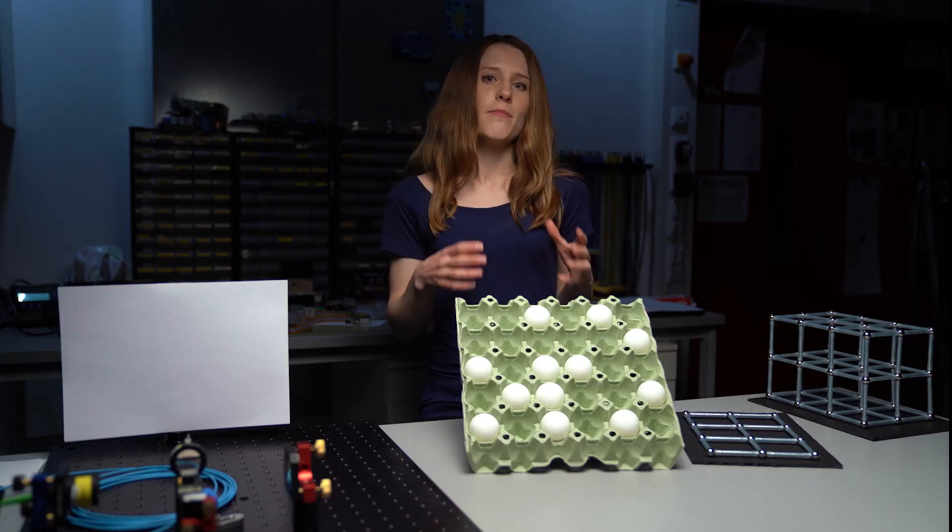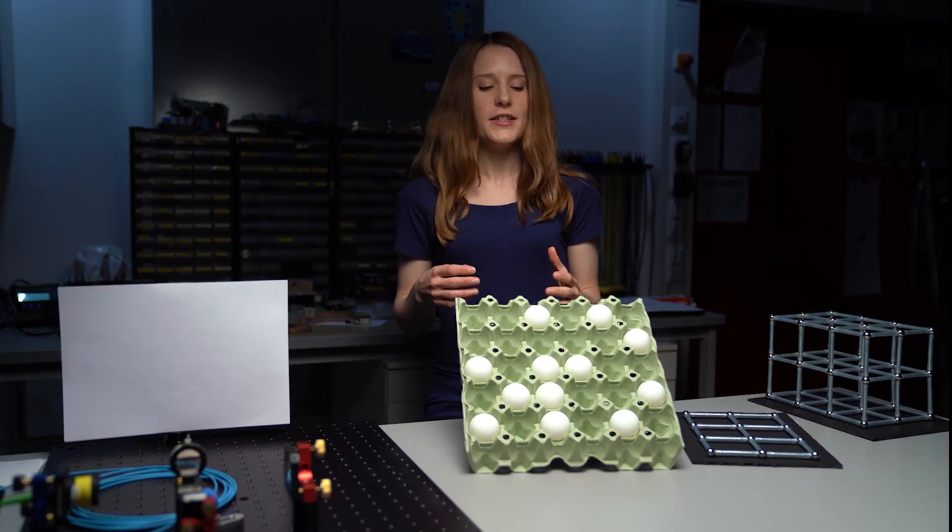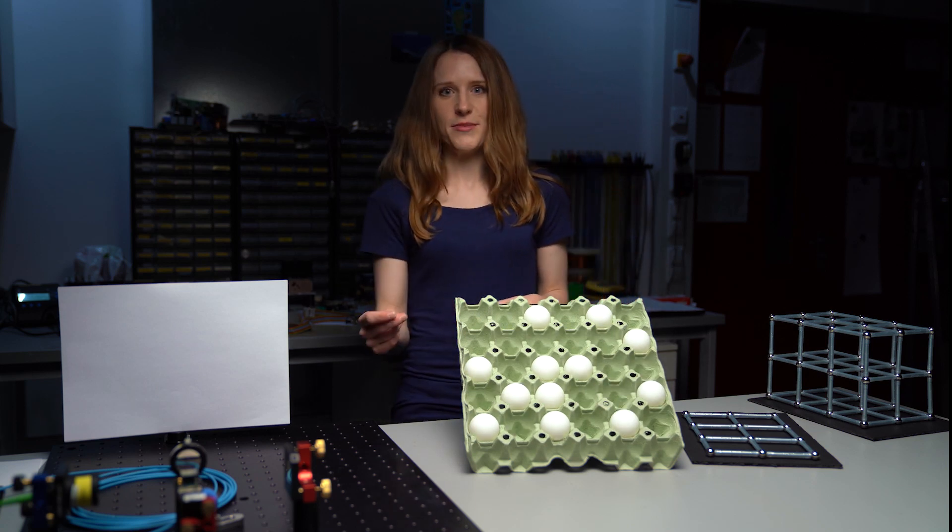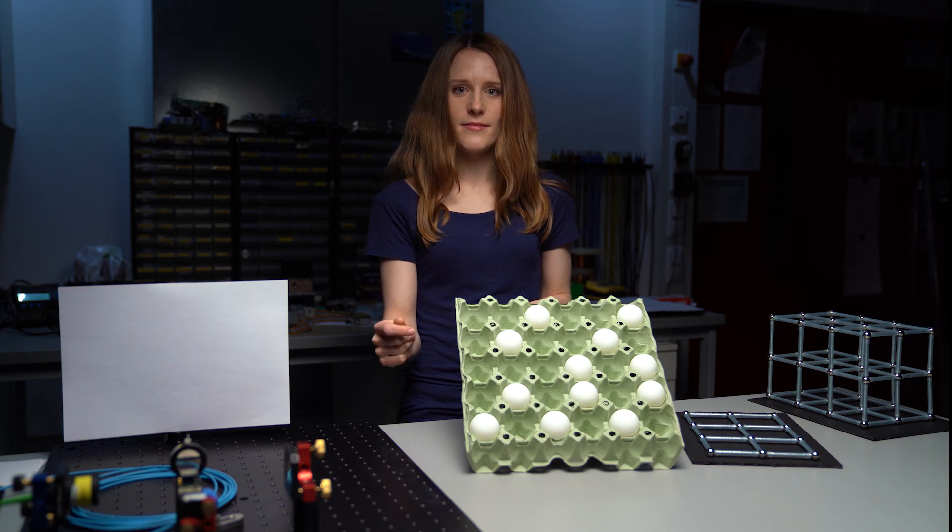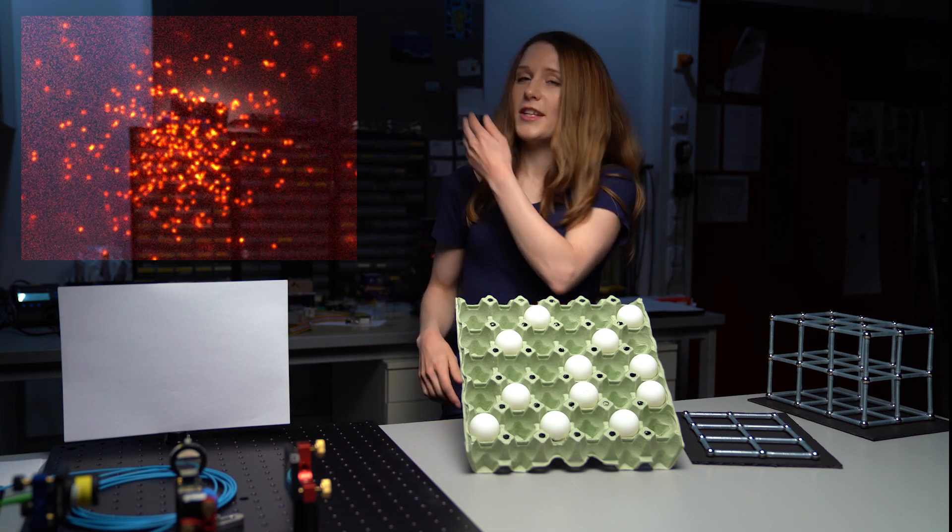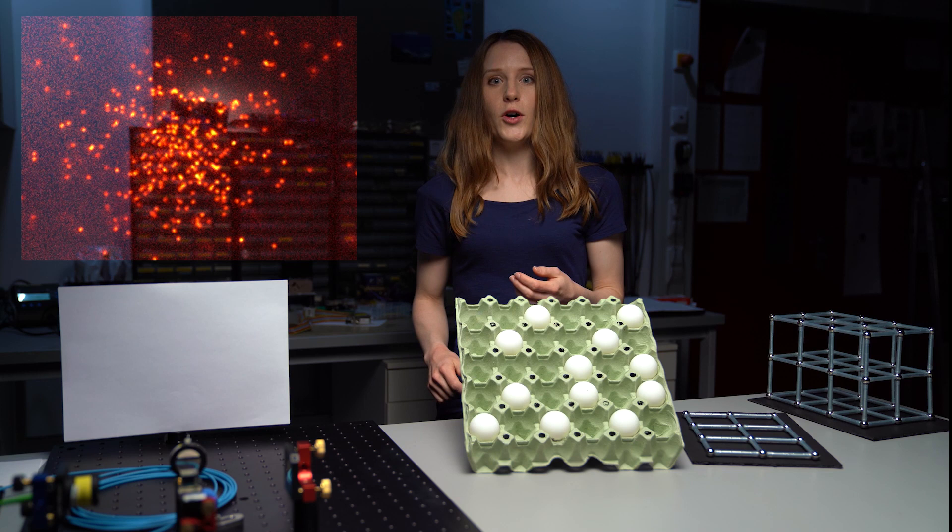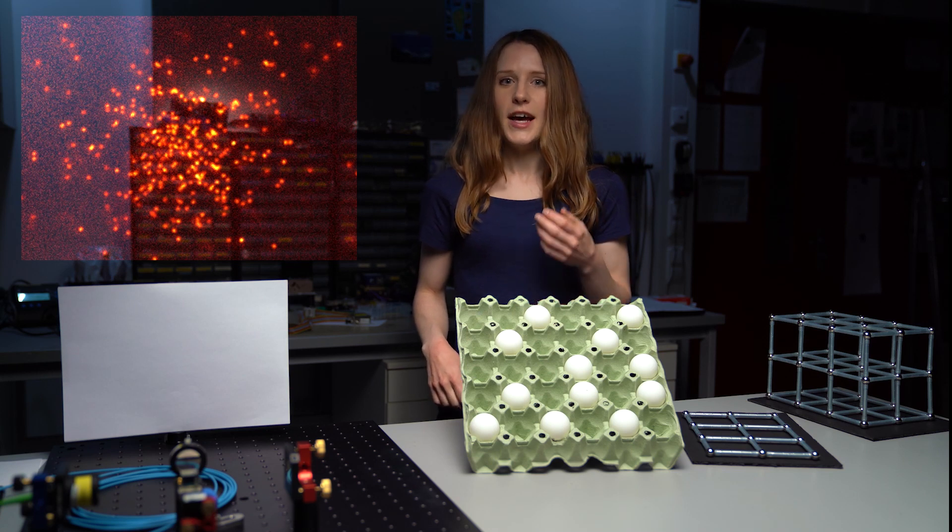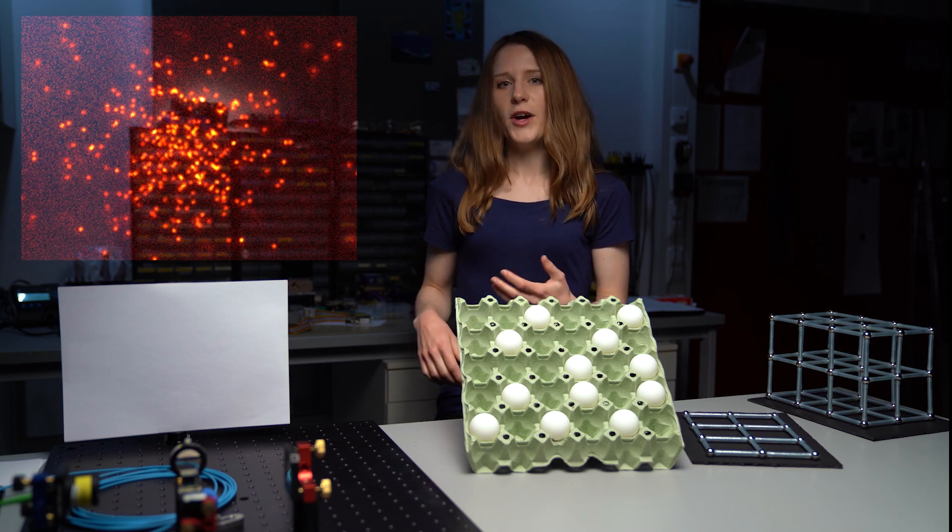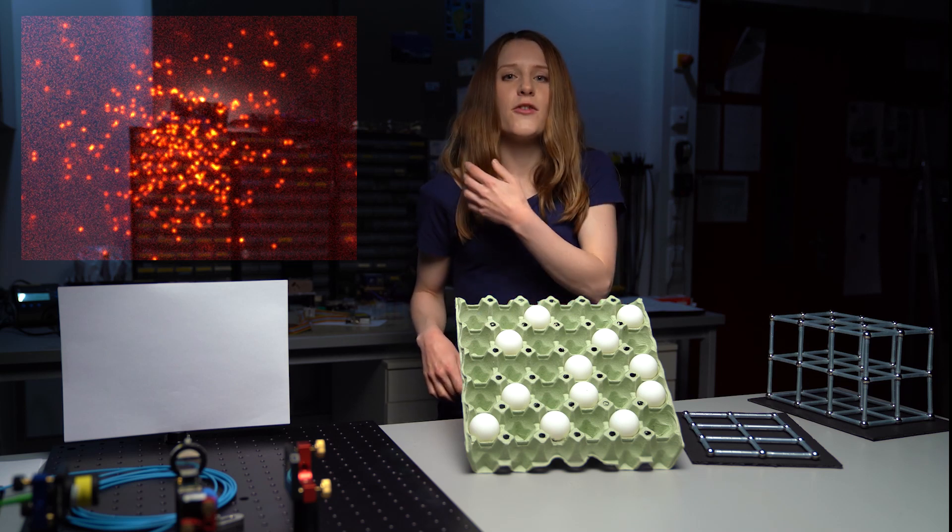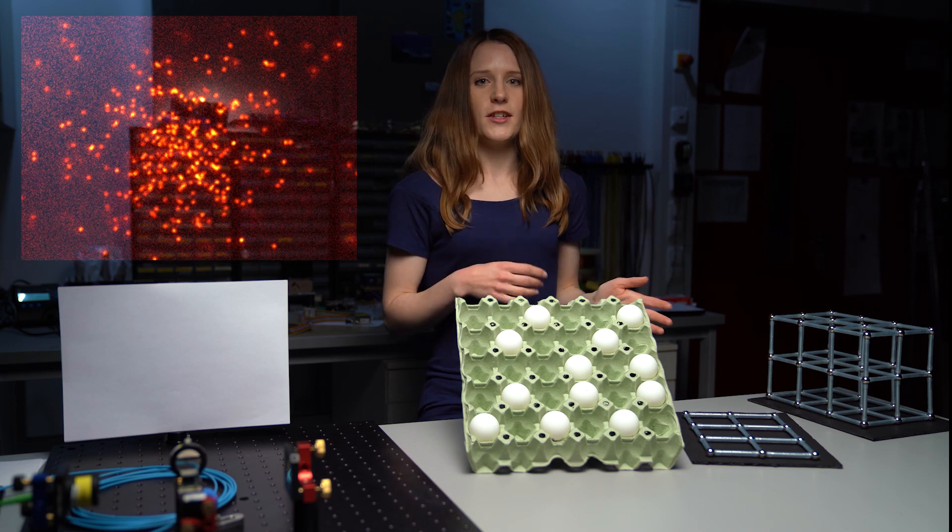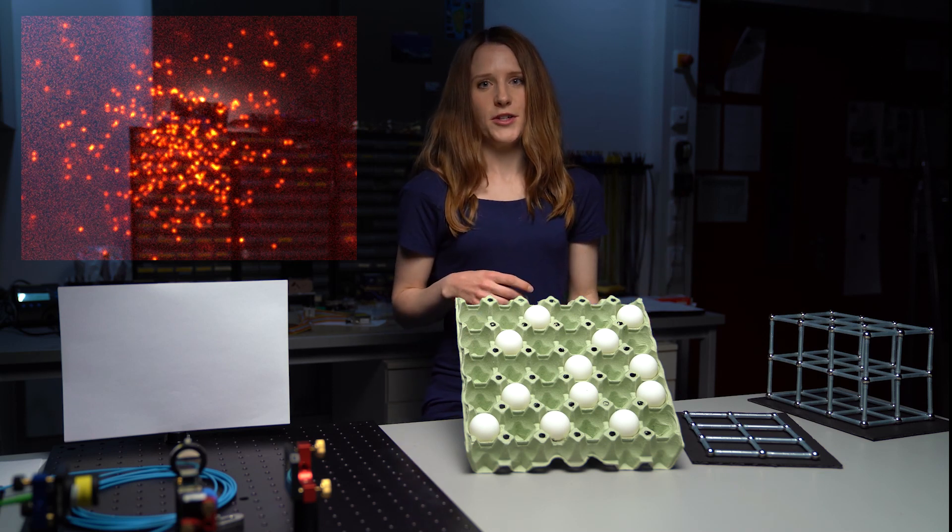To observe the atoms in the lattice we take another laser with a different color and a very big microscope objective and take snapshots of the atoms. This is a real snapshot taken from one of our labs where you can see atoms being on single lattice sites in a very big square lattice. And you could not take these kind of pictures from a real crystal but using our model system in the lab.